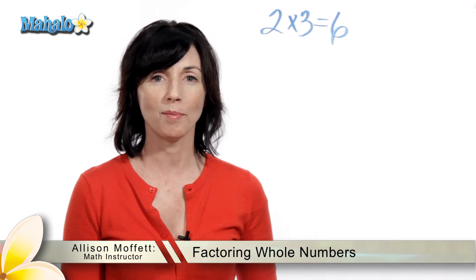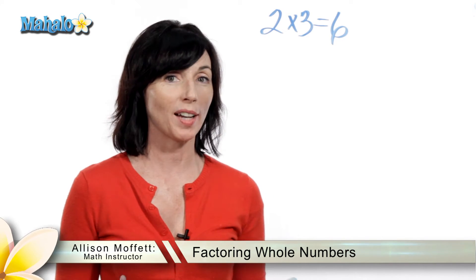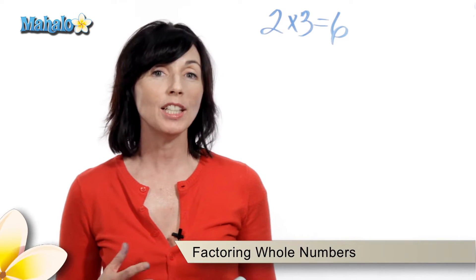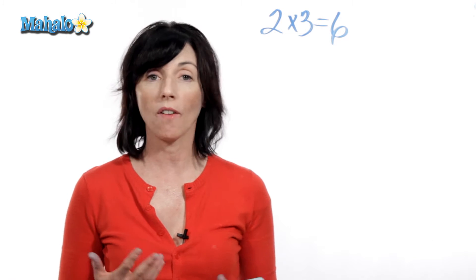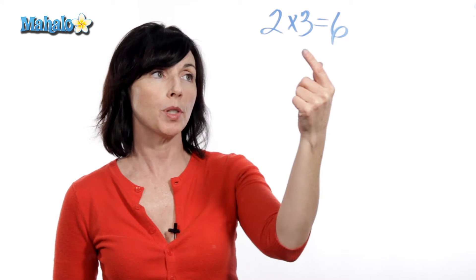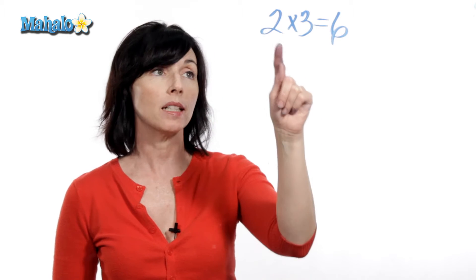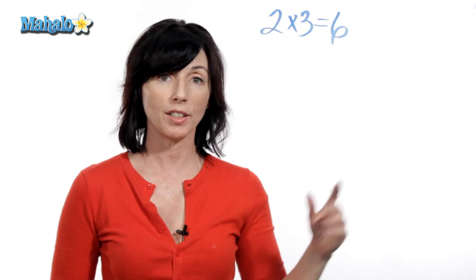Hey, it's Allison from mahalo.com, and I want to talk to you about finding factors for whole numbers. Any two whole numbers multiplied together are factors of their product. So, 2 times 3 is equal to 6. That means that 2 and 3 are factors of 6.